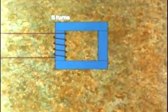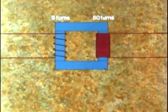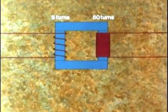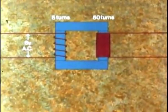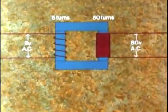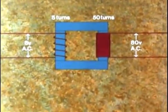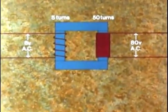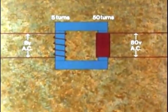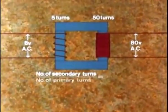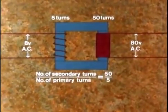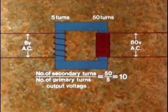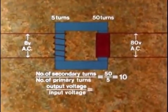Suppose we have five turns of wire in the primary coil and 10 times that, 50 turns in the secondary. And suppose we apply an input EMF of, say, 8 volts AC. The output EMF will be 10 times that, 80 volts AC. And we will have stepped up the voltage and we have a simple transformer. Let's look at it more carefully. The number of secondary turns divided by the number of primary turns equals 50 over 5 equals 10. But the output voltage divided by the input voltage also equals 10.